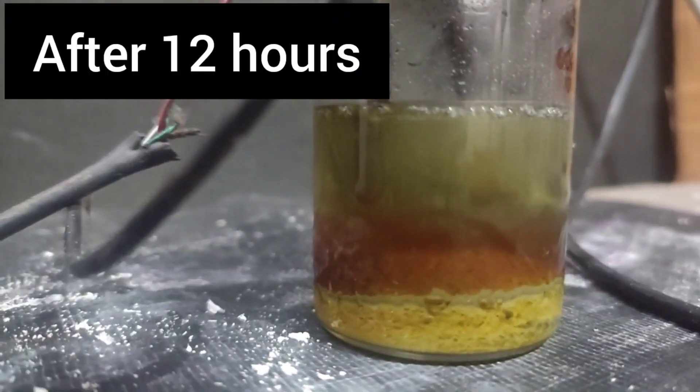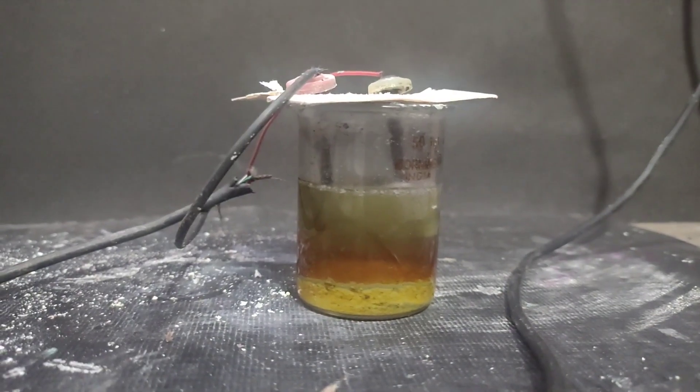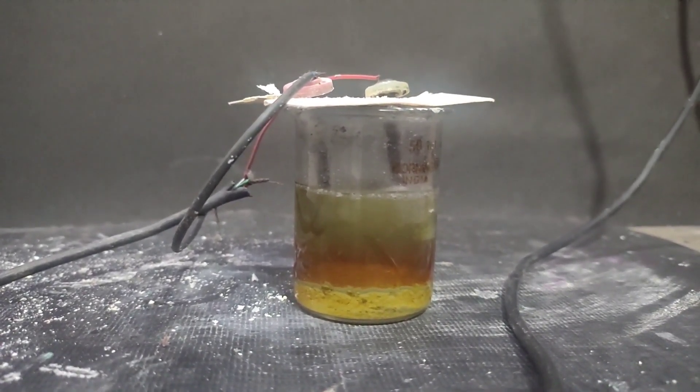You can see here, after 12 hours, three layers are formed. Lower one is the potassium bromate layer, upper one is the bromine layer and above layer is without the bromine.